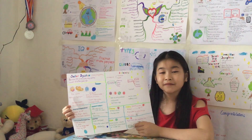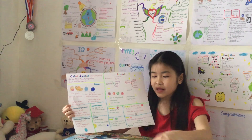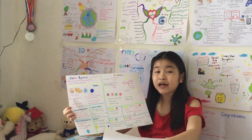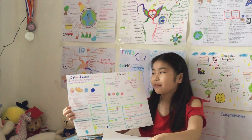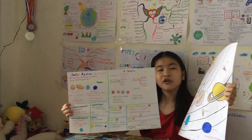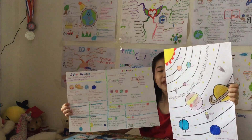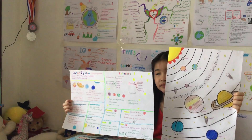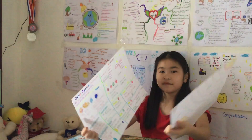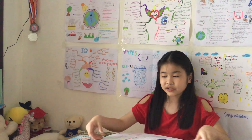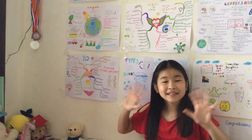That is all about my solar system — with eight planets and all of their traits, as you can see. Thank you for listening. Goodbye!